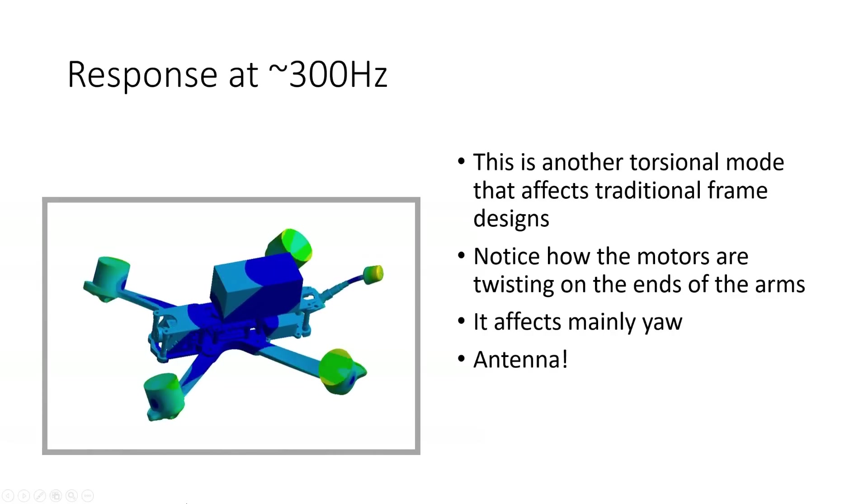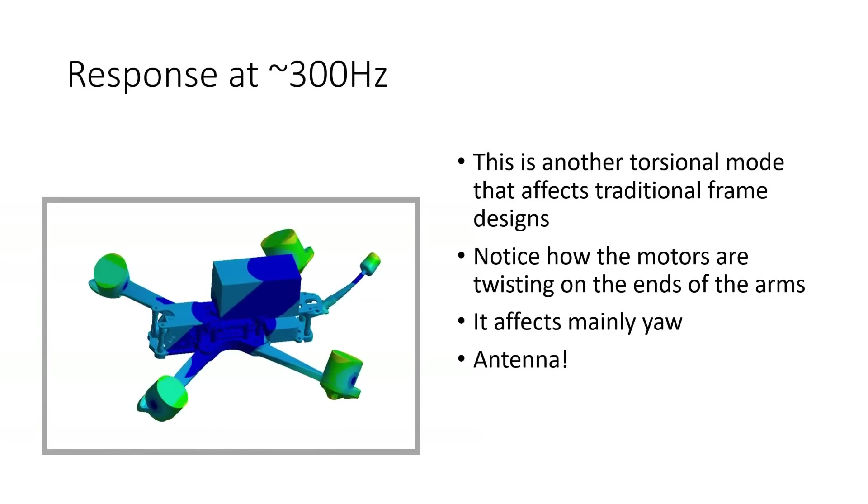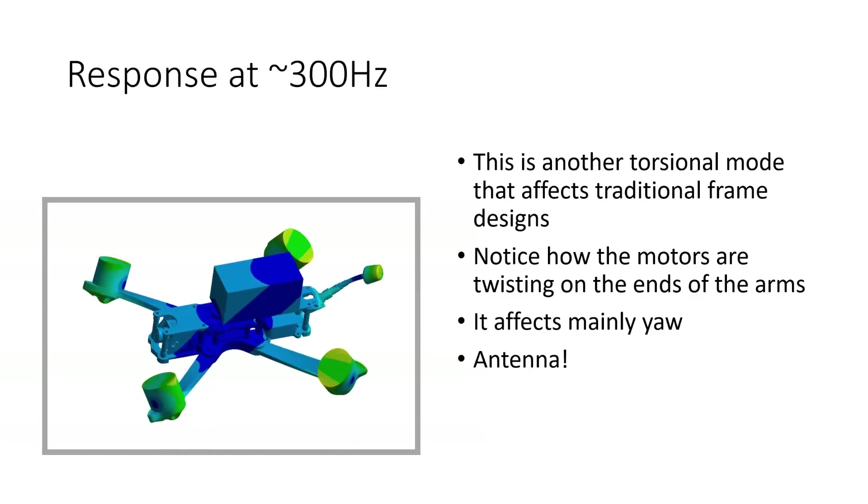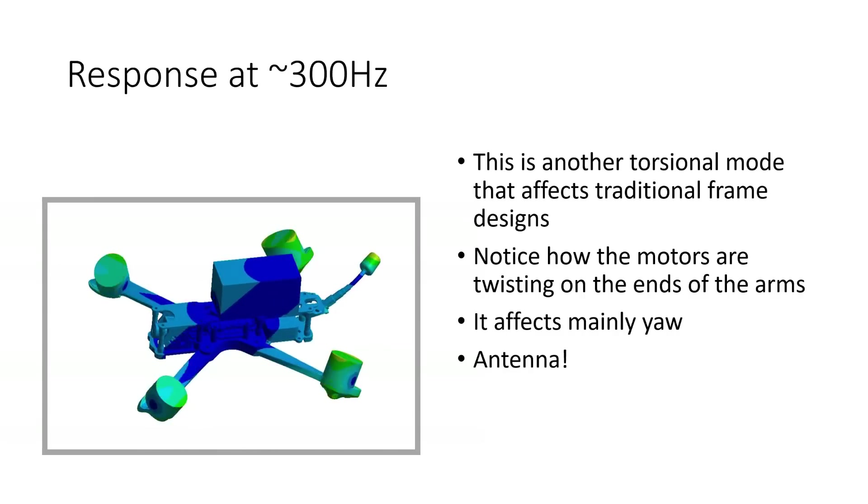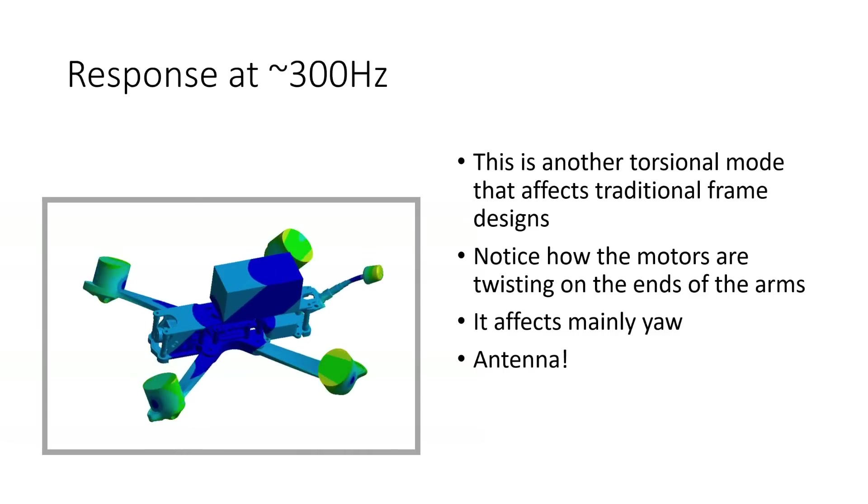So if we take a look at the response at about 300 hertz we can see immediately why this is so visible on the yaw axis. This mode is primarily a yawing mode so all of the motors are twisting on the ends of the arms and the body of the quad is yawing left and right in response to that. We can see that even at these high frequencies we still get the antenna participating so it's still not helping us, and that this is primarily to do with the torsional stiffness of the arms that govern this mode.